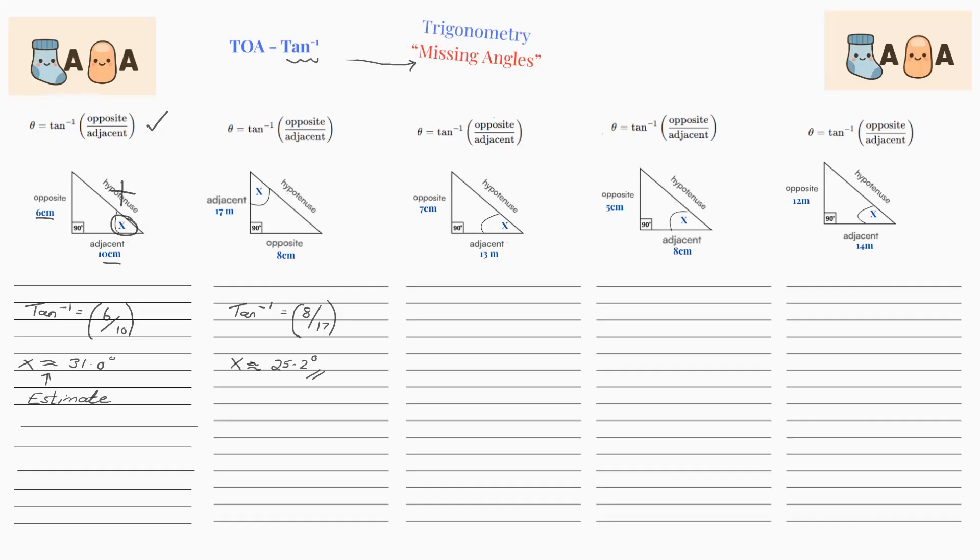Same again. Tan inverse. And then we have opposite is 7 over 13. And then your calculator will spit out 28.3 or thereabouts.